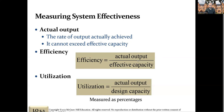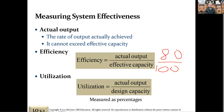If your actual output is 80 and normally you're able to get 100 units out, then you would be at 80% efficiency — 80 divided by 100 is 80%. So we would say we're operating at 80% efficiency, and I can compare efficiency one week to another week to see if I am more efficient or not.